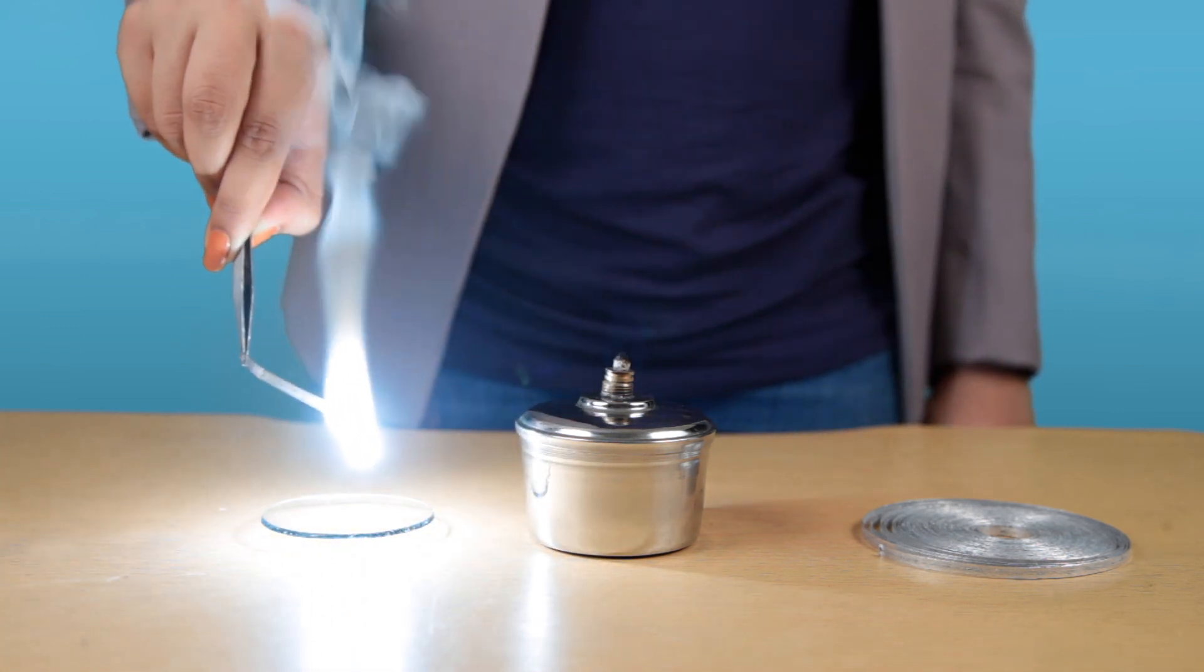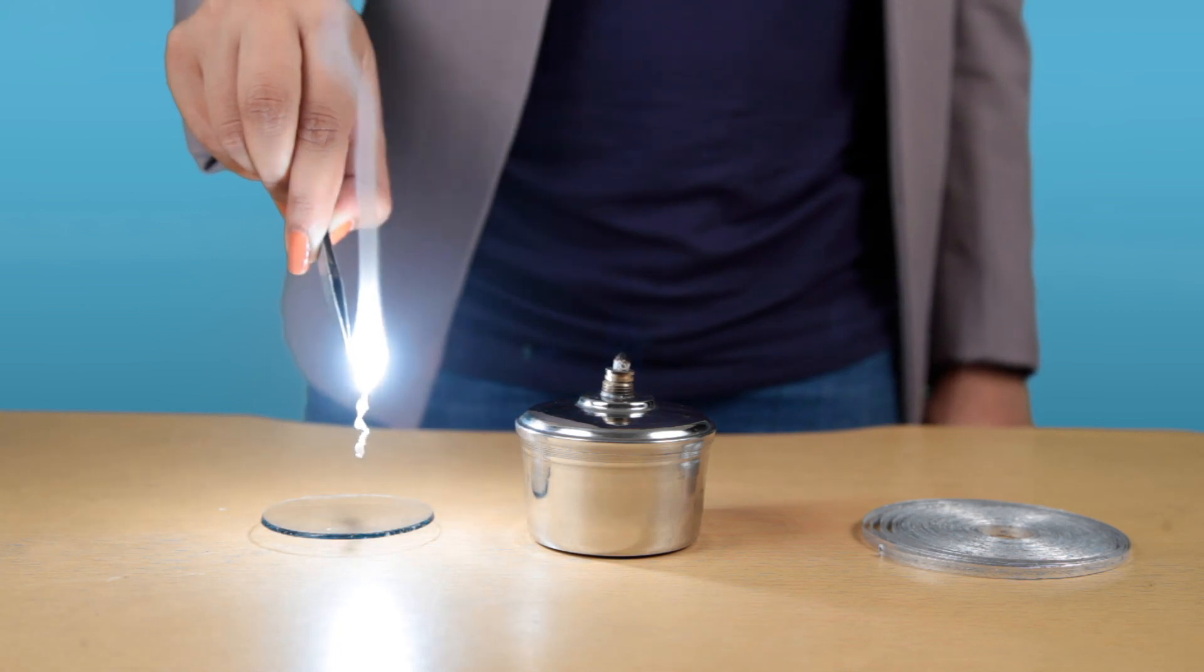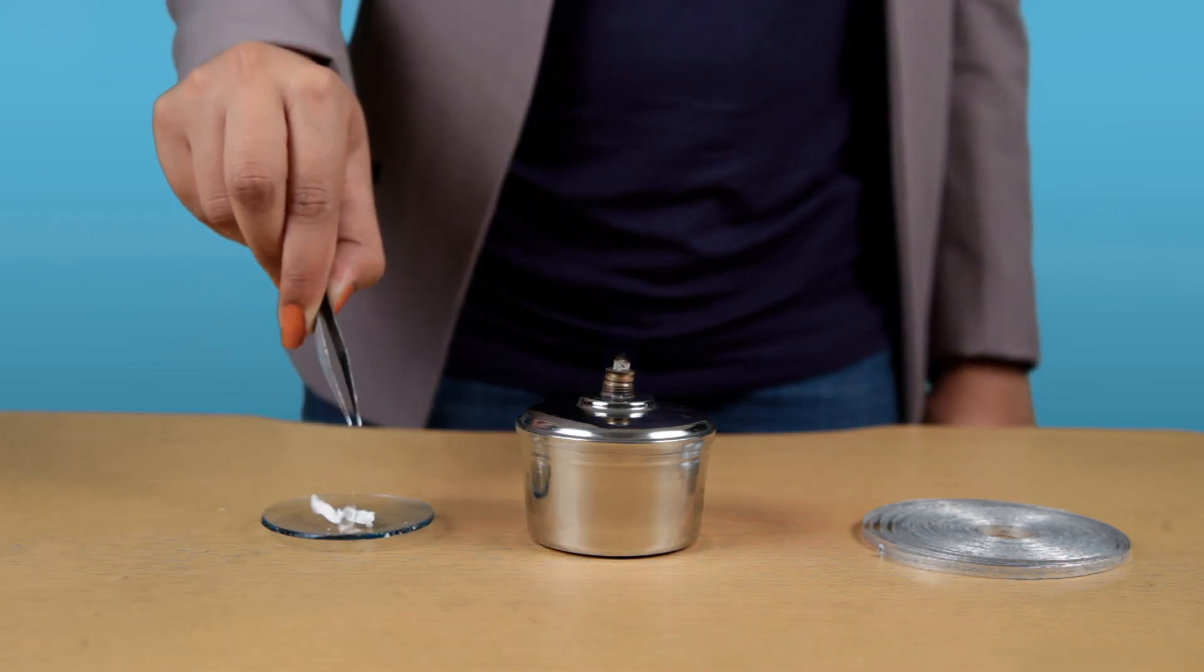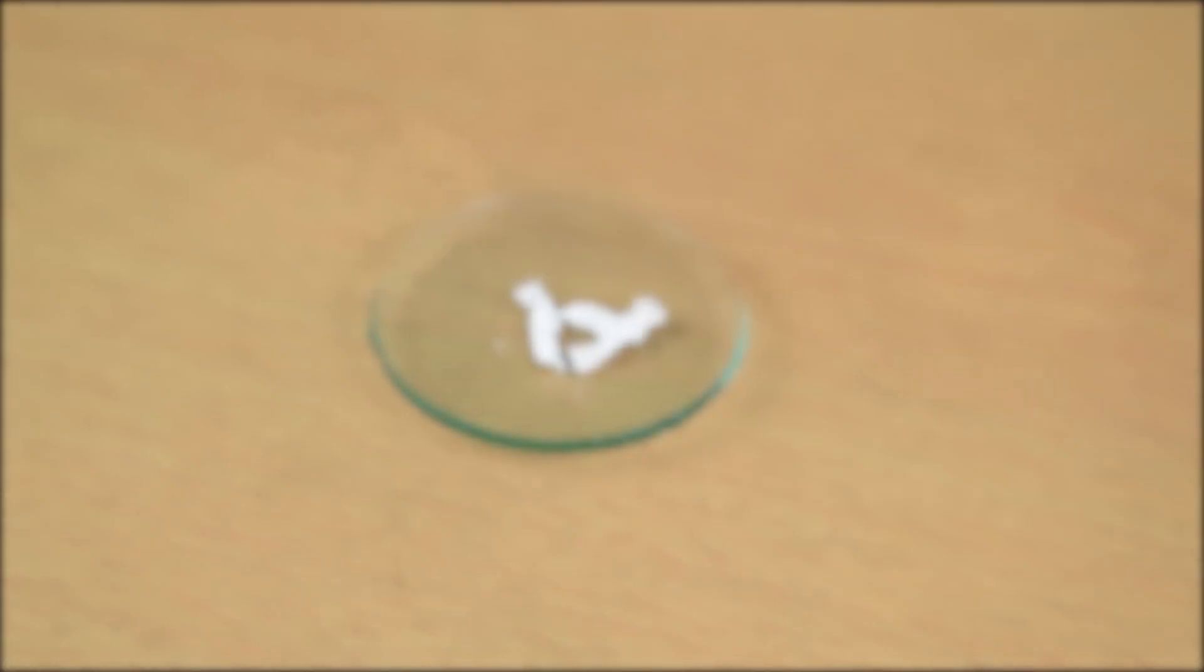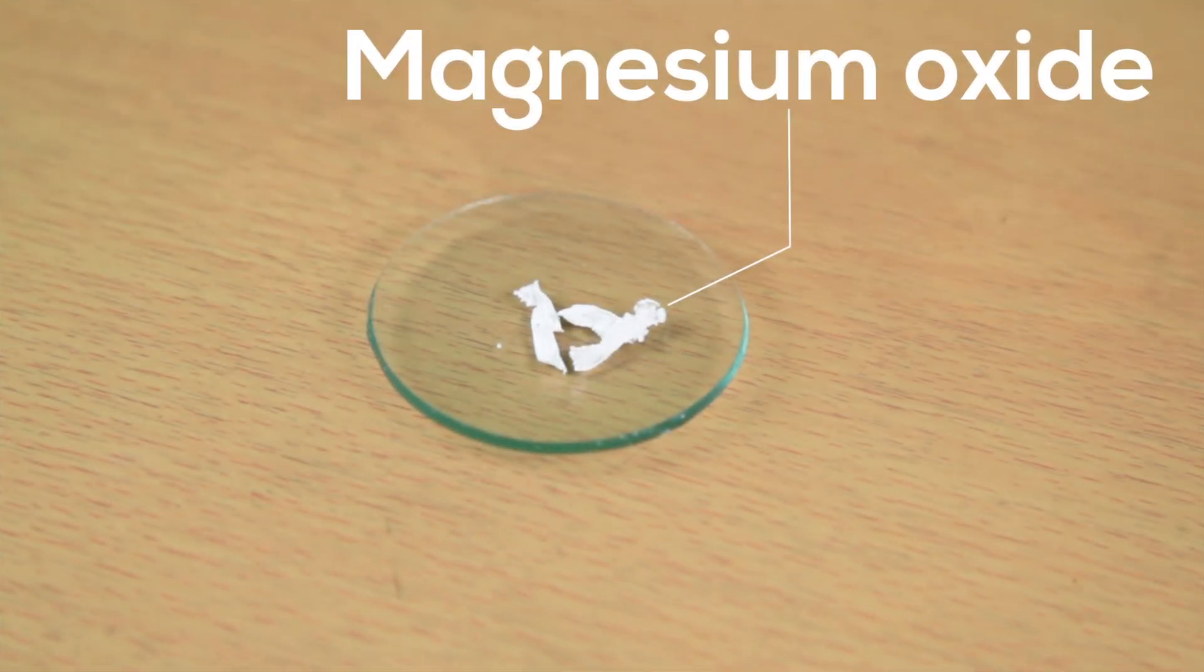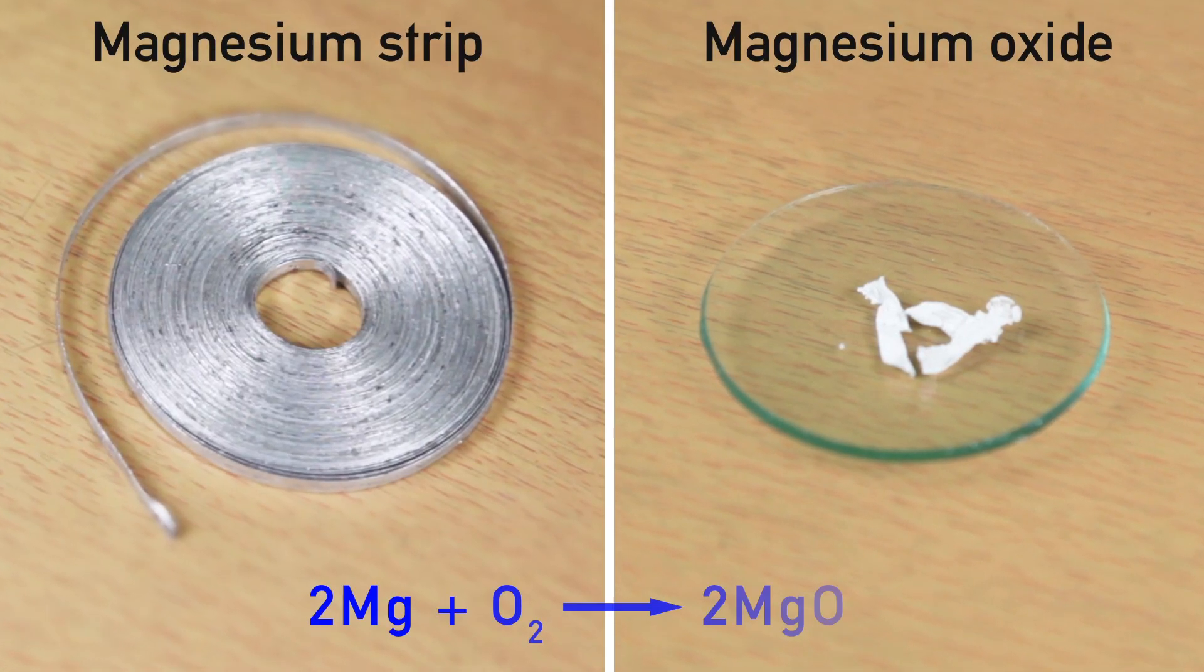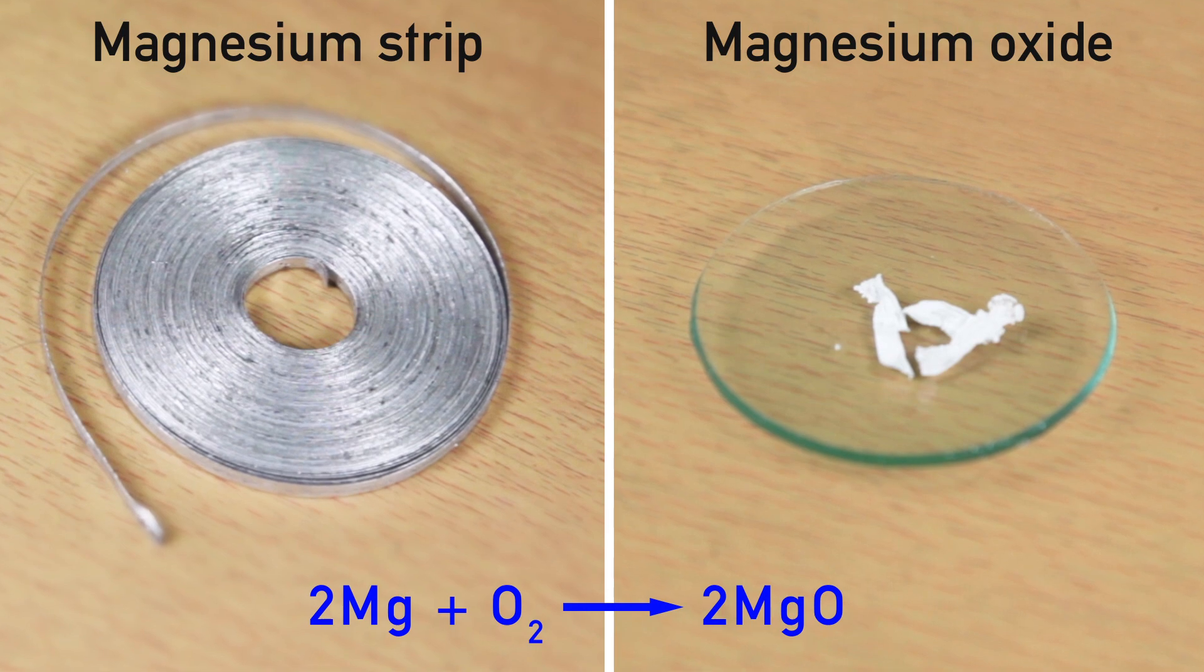We can observe that magnesium ribbon burns with a dazzling white flame and what remains at last is a white powder in a watch glass which is nothing but magnesium oxide. This burning of magnesium strip is actually a chemical change from magnesium to magnesium oxide.